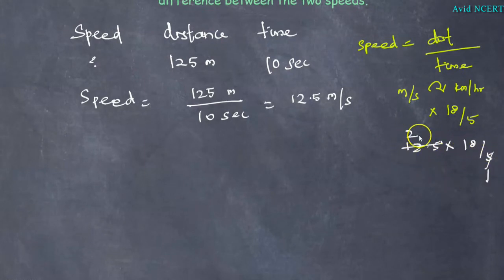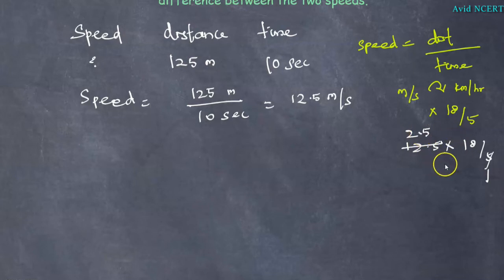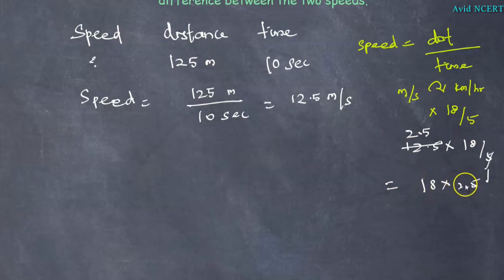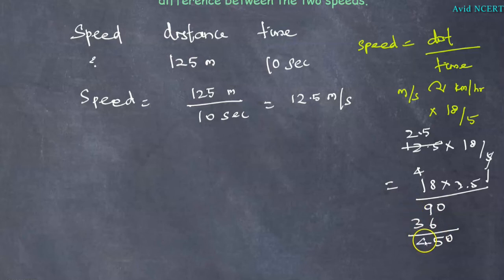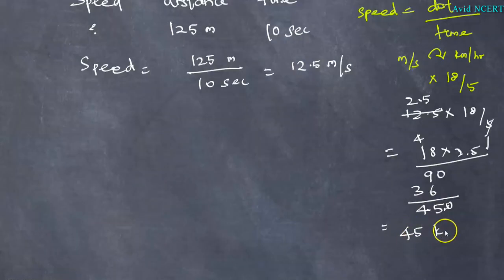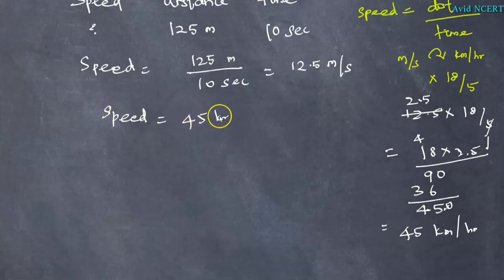Simplifying 12.5 into 18 by 5: 12.5 divided by 5 gives 2.5, and 18 into 2.5 equals 45. Since there is a decimal point before one digit, we place the decimal point accordingly, giving us 45 kilometers per hour. So the relative speed equals 45 kilometers per hour.